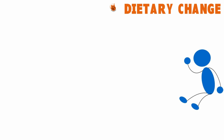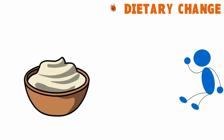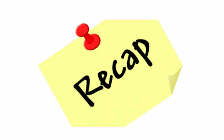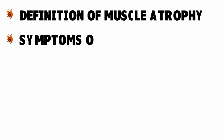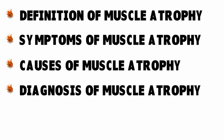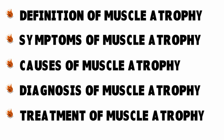If a poor diet is the cause of muscle atrophy, your doctor may suggest dietary changes or supplements. To wrap up today's conversation, we talked about five things: the definition of muscle atrophy, symptoms of muscle atrophy, causes of muscle atrophy, diagnosis of muscle atrophy, and treatment of muscle atrophy.